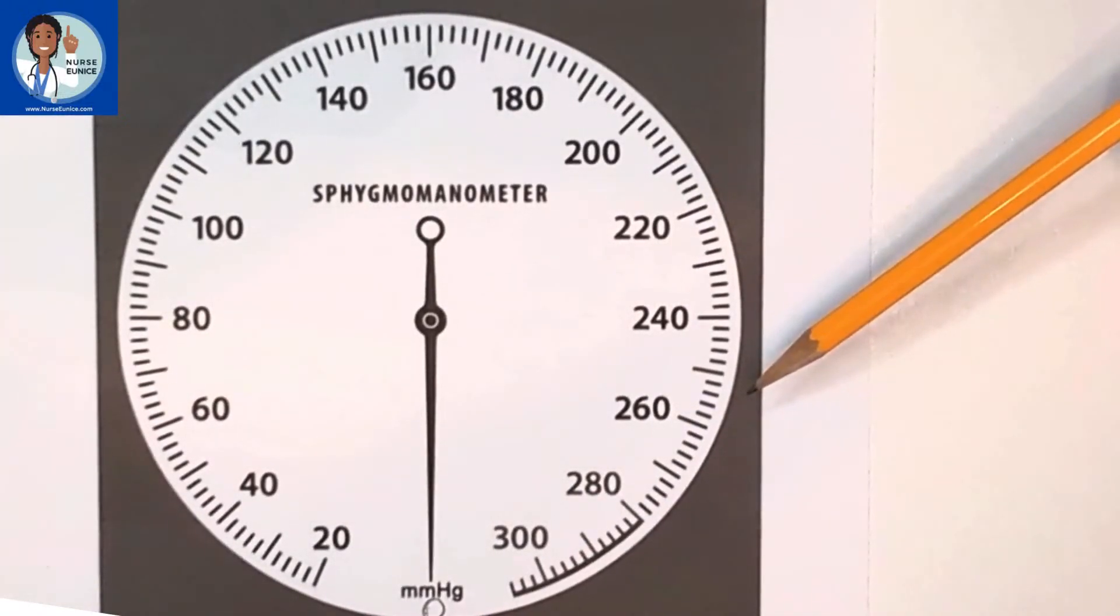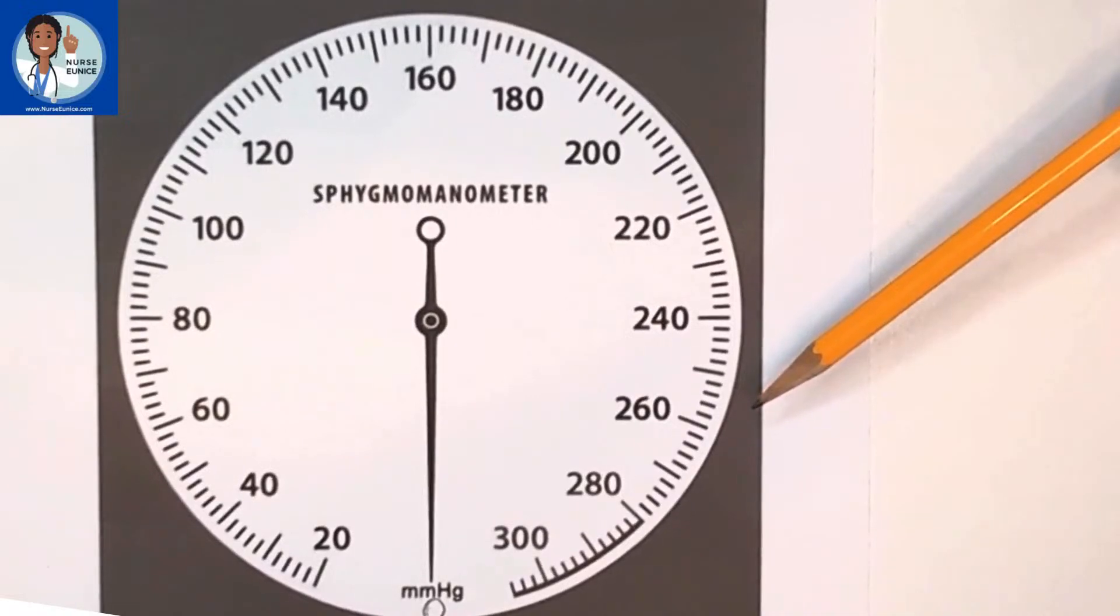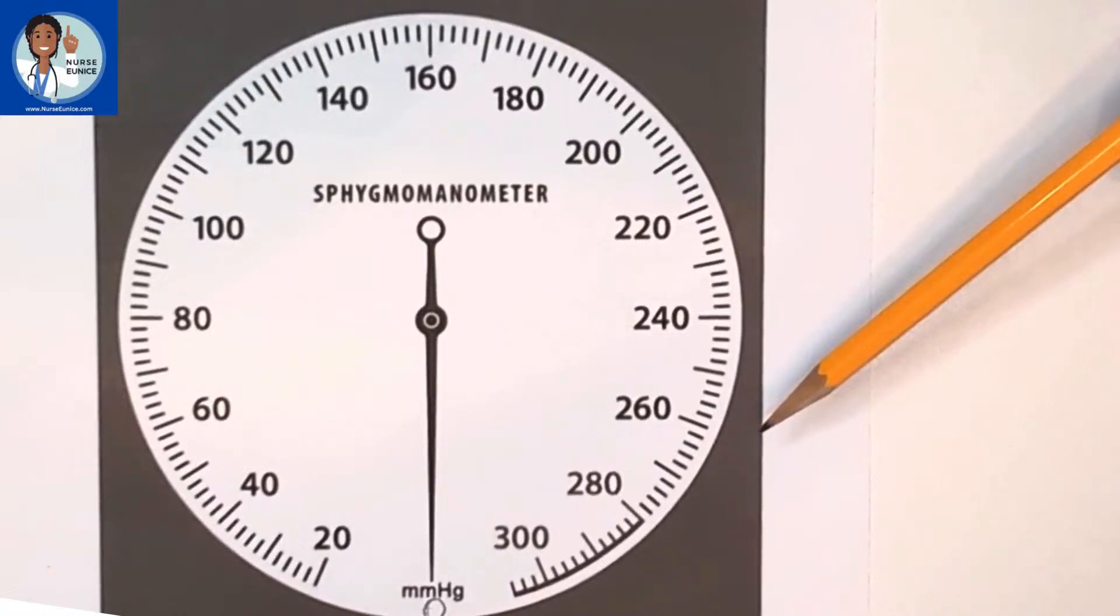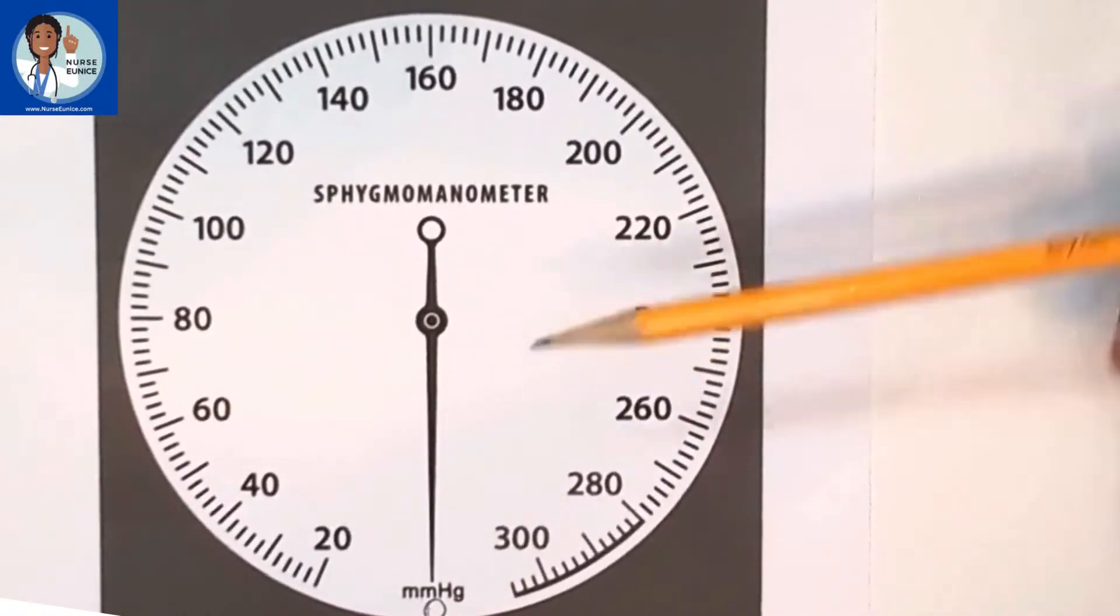If you're using an automated blood pressure cuff, then sometimes an odd number will be seen. But if you're using a stethoscope and a manual blood pressure cuff or sphygmomanometer, you should not obtain odd readings.